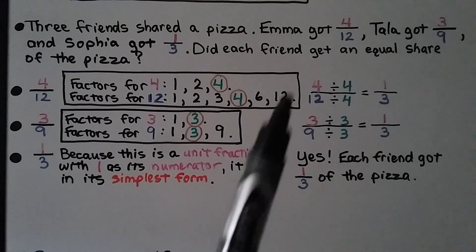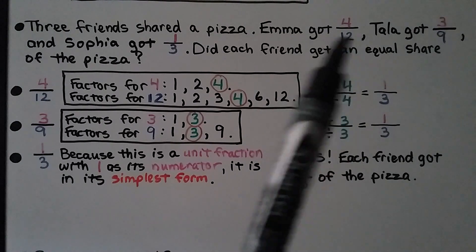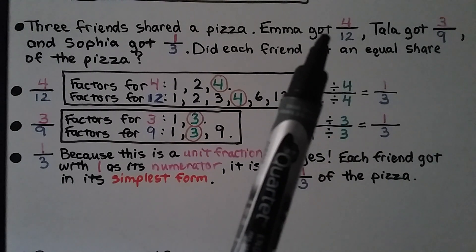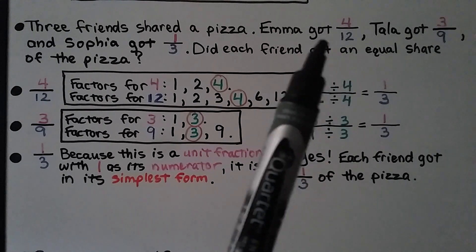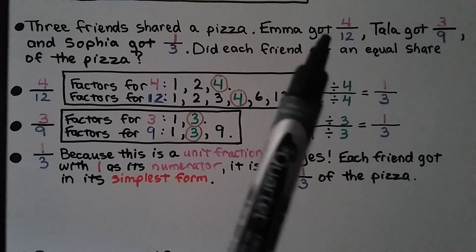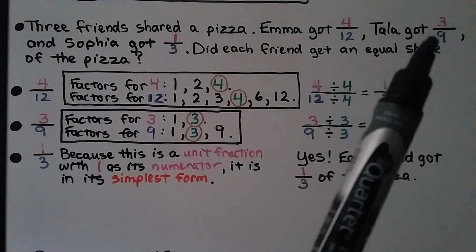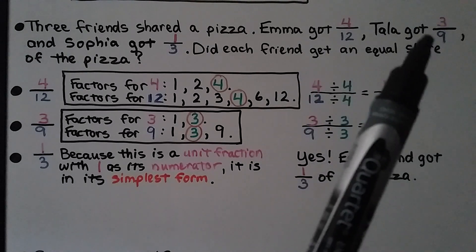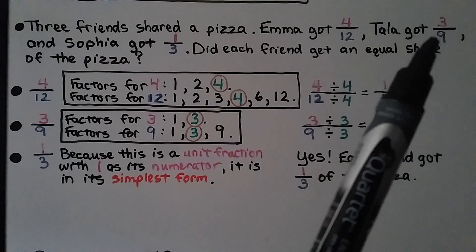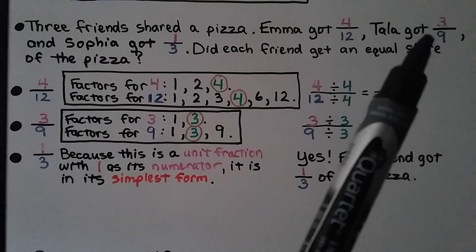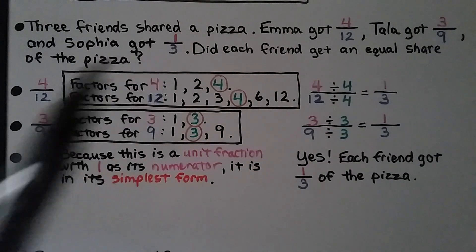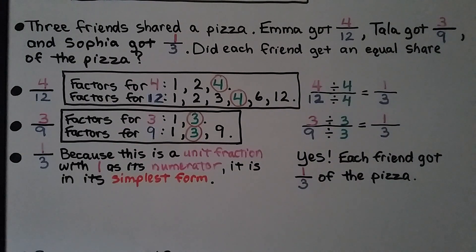Emma's slices were very tiny because it was twelfths. Tala's were medium-sized because it was ninths. And Sophia had the largest single slice of one-third of the pizza.